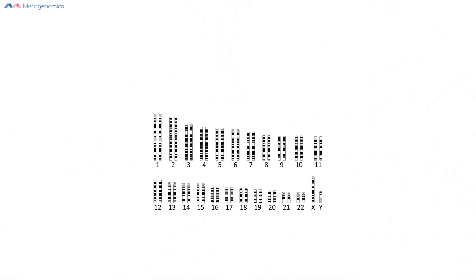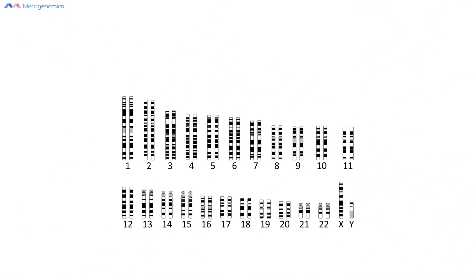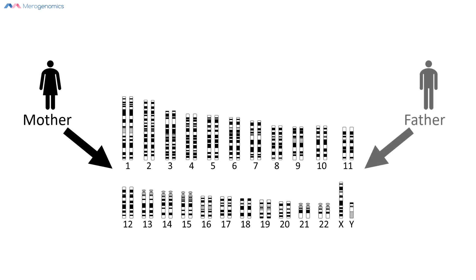Within the nucleus itself, your DNA is packaged into structures called chromosomes. Half of your chromosomes you obtain from your mother and the other half you obtain from your father. Along the way, you also obtain mutations from your parents — some of these mutations you get from your father and some you obtain from your mother.